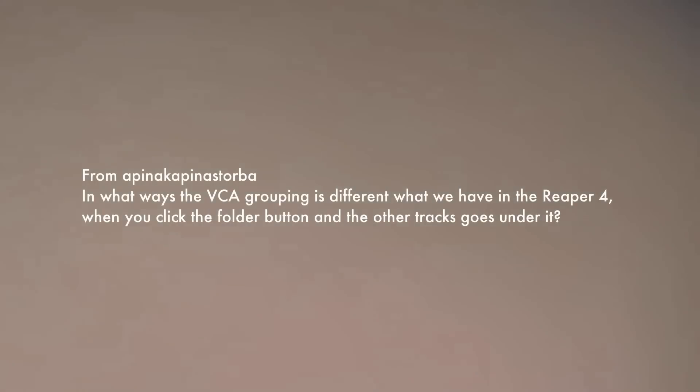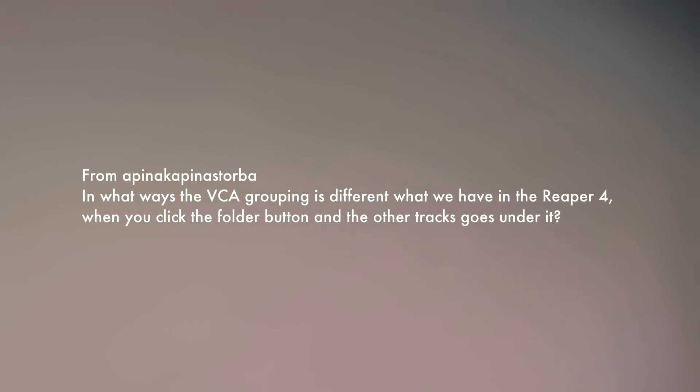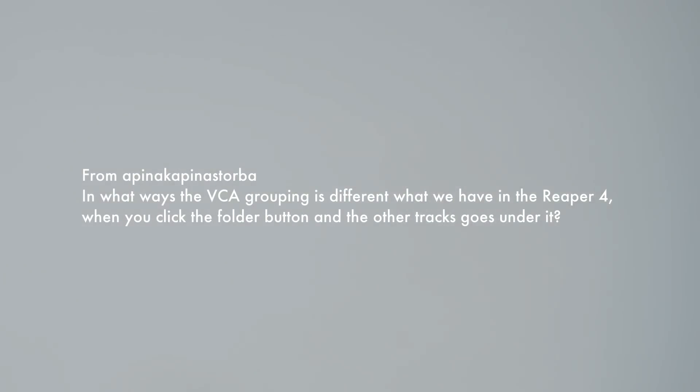Question three comes from Apenakapinastorba — you can choose any name you want on YouTube, but anyway. He's asking: in what ways are the VCA groups different from using folders in Reaper 4? In some ways they're similar, but there are a lot of differences. VCAs only do volume and panning; they don't process any audio — it's just a control signal to the slave tracks. Automation on the VCA group can be applied to the individual slave tracks, like I showed in the tour video. Also, VCAs do not have to be directly above the tracks they're controlling in the mixer or arrange view. You can use both VCAs and folders — they have different uses and purposes, and one is not better than the other. There's a really good post on the forum that I'll link to in the description and in the blog post.